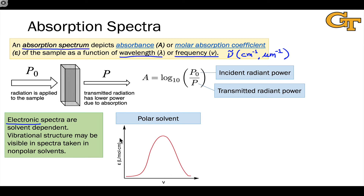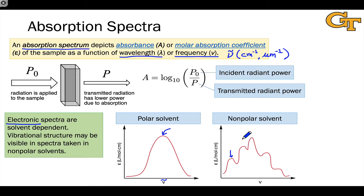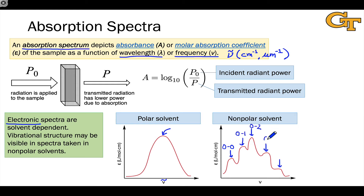A typical absorption spectrum has the molar absorption coefficient on the y-axis and wavenumber on the x-axis, with no vibrational structure. We can identify the most likely transition at the top of the peak, but have no idea where specific vibrational levels fall within this broad Gaussian-shaped peak. In a non-polar solvent, we start to see vibrational levels — specific sub-peaks emerge corresponding to various transitions between vibrational levels in the ground and excited states. The ground state is typically in its zero vibrational level, so the lowest energy transition is 0-0, and we can also see 0-1, 0-2, 0-3, etc., up to higher vibrational levels of the excited state, appearing at higher wavenumber.